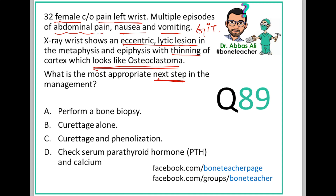This patient has GI symptoms along with bony involvement — a lesion in the bone that looks like osteoclastoma. So what are the key features helping us identify the diagnosis? We have bone involvement and GI tract symptoms together.